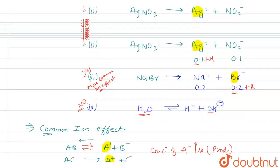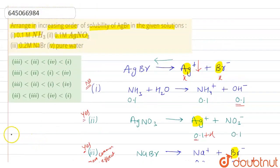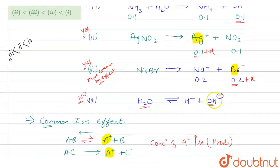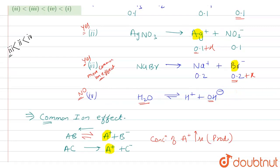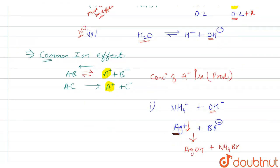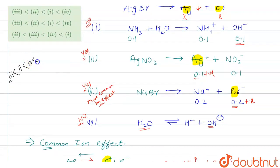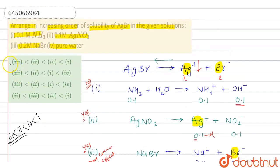In conclusion, the correct increasing order of solubility of AgBr is: option 3 (0.2M NaBr) has the least solubility due to the strongest common ion effect, followed by option 2 (0.1M AgNO₃), then option 4 (pure water), and option 1 (0.1M NH₃) has the greatest solubility. Therefore, option A is the correct answer.